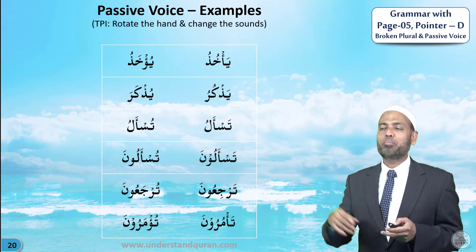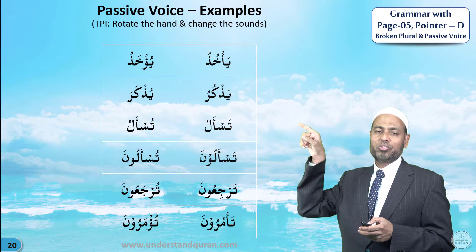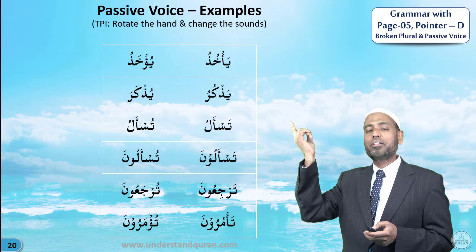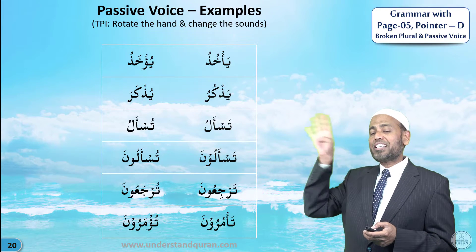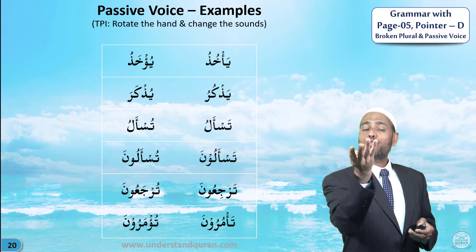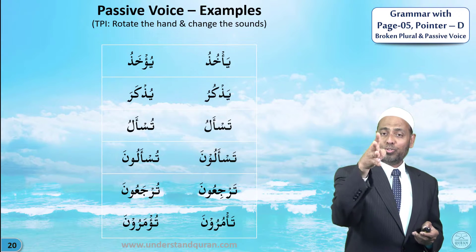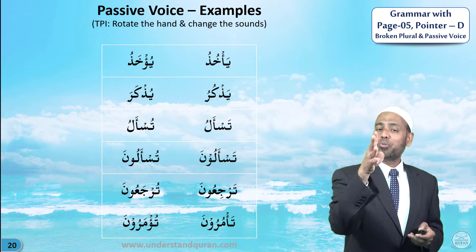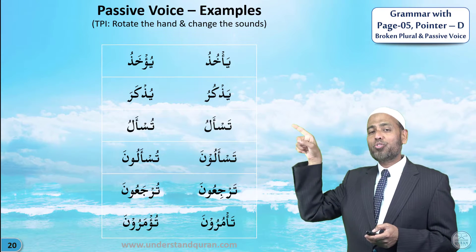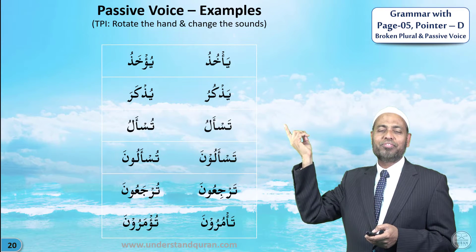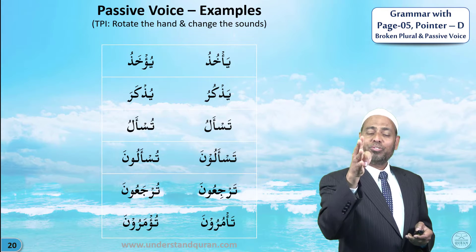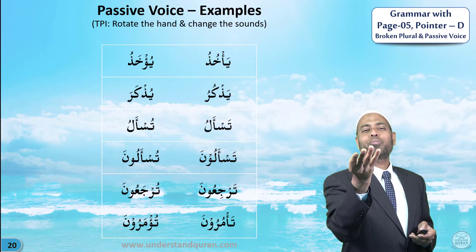Let's take some mudari' passive forms. Ya'khudhu means he takes; passive is yu'khahu — he is taken. Yadhkuru — he remembers; yudhkaru — he is remembered. Tas'alu — you ask; tus'alu — you are being asked. Tas'aluna — you all ask; tus'aluna — you all are being asked. Tarji'una — you return; turja'una — you will be returned. Ta'muruna — you all order; tu'maruna — you all will be ordered. Alhamdulillah.